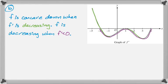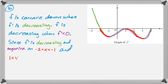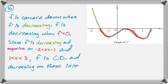We want intervals that include both of those. So I'm going to say since f' is decreasing and negative on the intervals from negative 2 to negative 1 and then from 1 to 3. We can conclude that f is concave down and decreasing on those intervals. And that's part b.